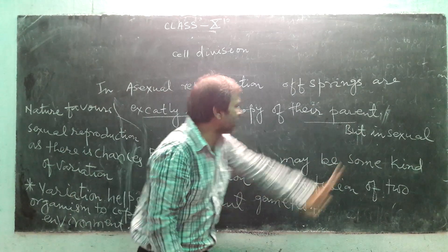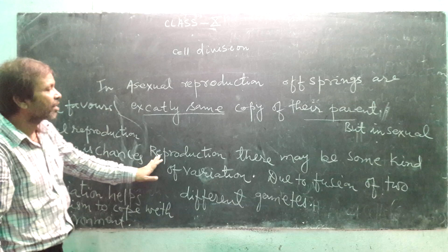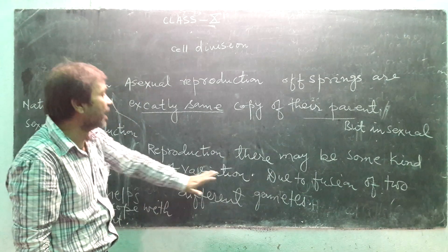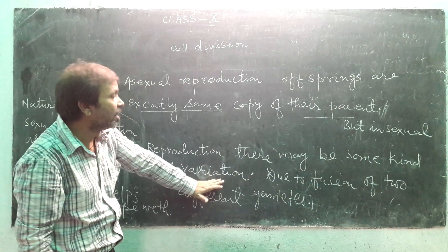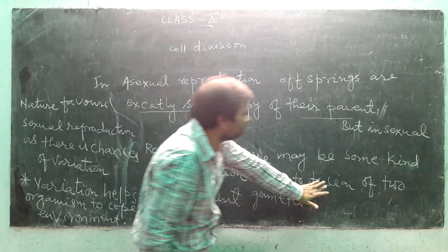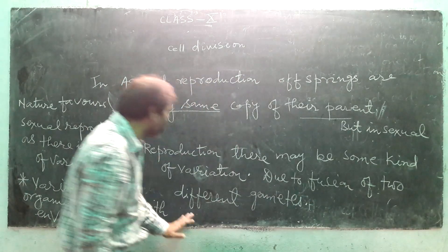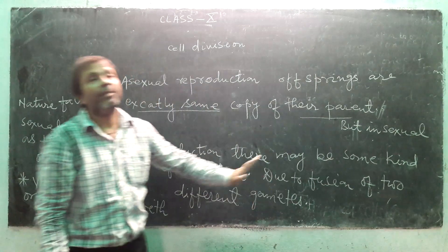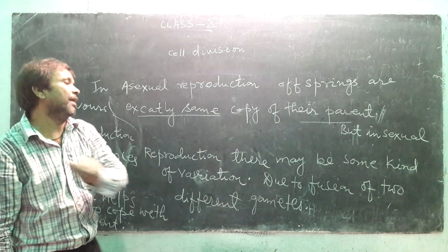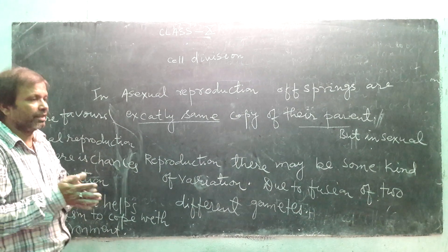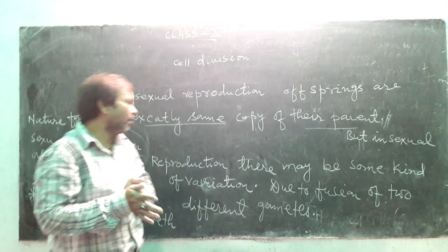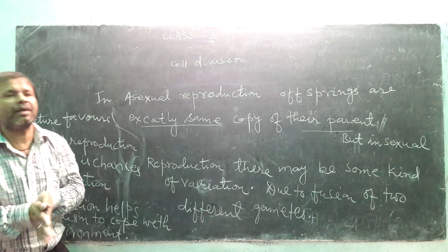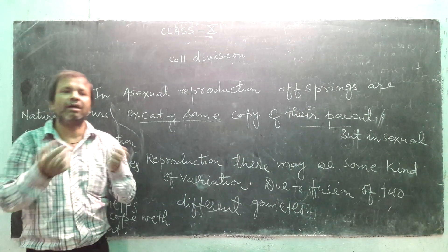Now in sexual reproduction, there may be some variation. This is due to the fusion of two different gametes — that is, male and female gametes. If we look at our own characters, we can see traits from both of our parents.